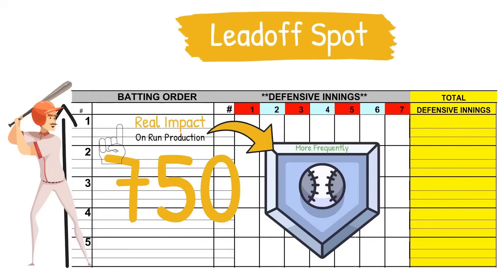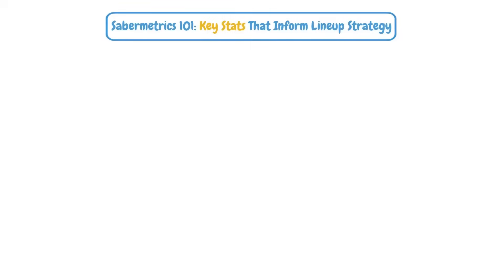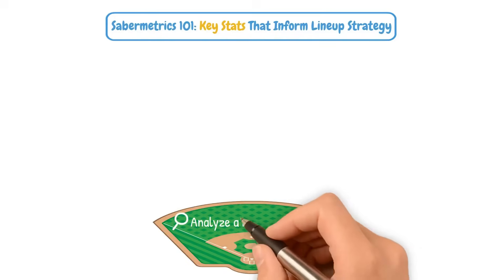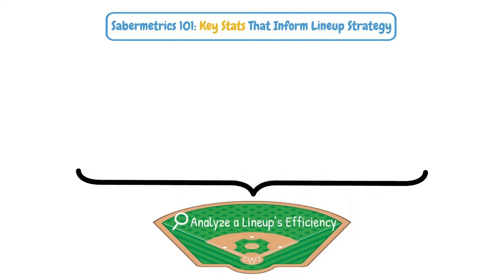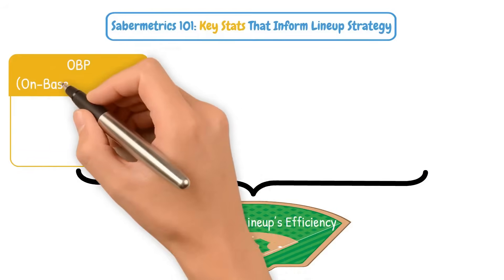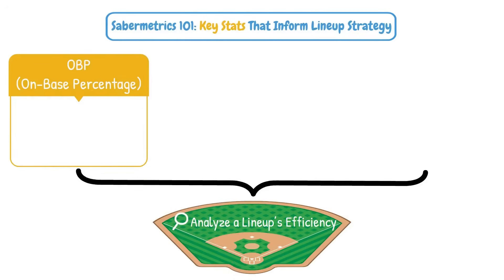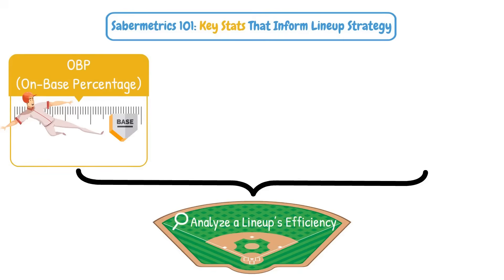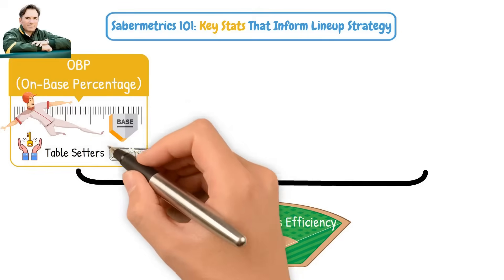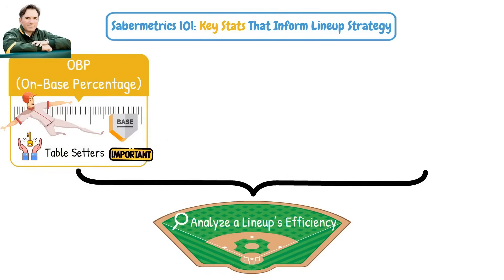That means who you put at the top has a real impact on your run production, because they are coming up to the plate much more frequently. So if you're placing your best hitter third, he's actually coming up to the plate a little bit less than he could. Let's start by laying the groundwork with the metrics that help us analyze a lineup's efficiency. First, we have On-Base Percentage, a pretty simple calculation that measures how often a player gets on base — key for your table setters. You can thank the Moneyball era for helping shed light on the importance of this stat for lineup optimization.